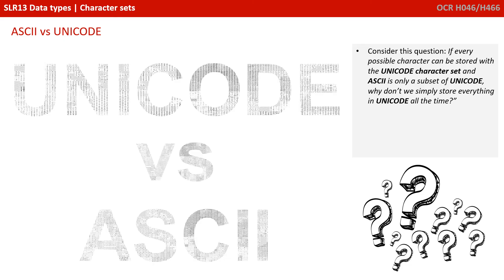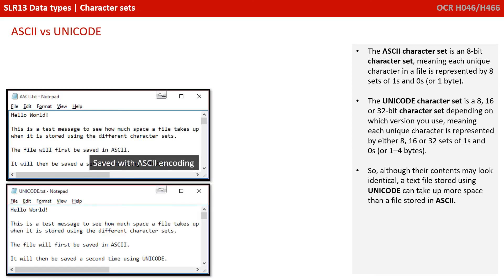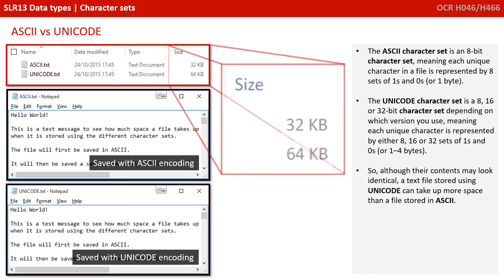Consider this question: if every possible character can be stored with the Unicode character set and ASCII is only a subset of Unicode, then why don't we simply store everything in Unicode all the time? The ASCII character set is an 8-bit character set, meaning each unique character is represented by 8 bits, or one byte. The Unicode character set, depending on which version, is an 8, 16, or 32-bit character set — meaning each unique character is represented by 1 to 4 bytes. So although their contents may look identical, a text file stored using Unicode encoding can take up much more space than a file stored in ASCII.